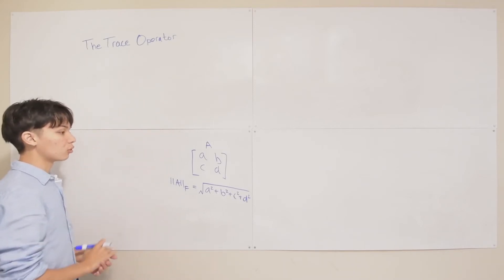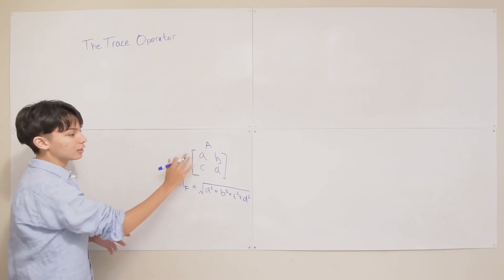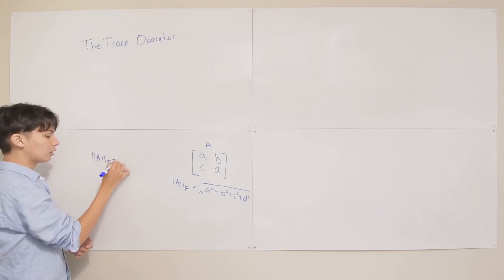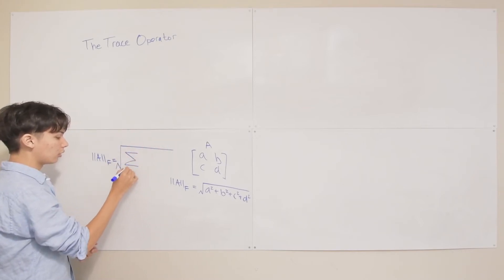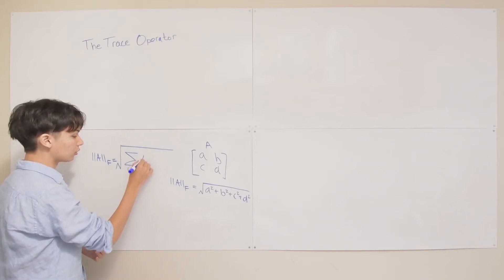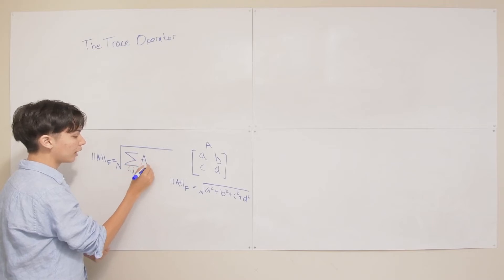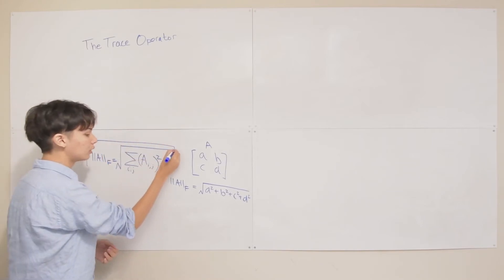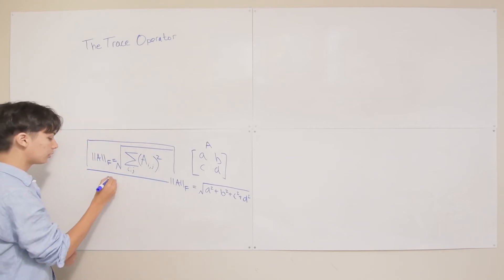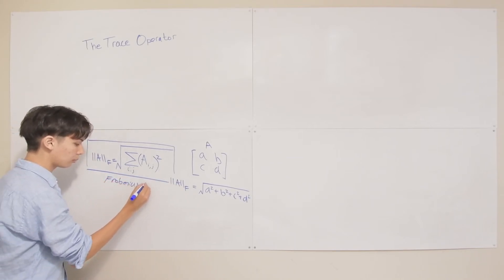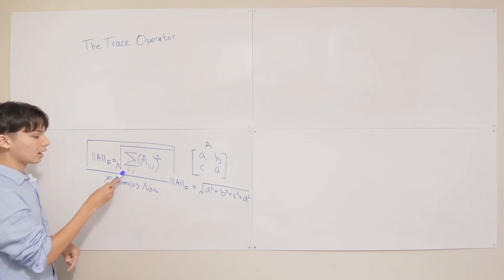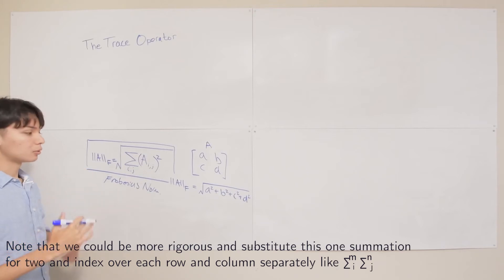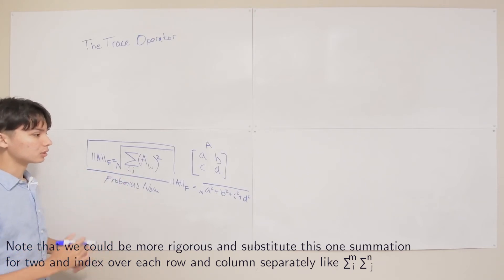The general notation for the Frobenius norm is clunky, because you have to use summation to index over all the elements in a matrix. The general notation is: for any matrix A, the Frobenius norm is the square root of the summation over i and j of A_{ij} squared. This is a bit clunky — if you have a rectangular matrix, the i's and j's go up to different maximum numbers because you might have more rows than columns, so it's a bit confusing and informal.